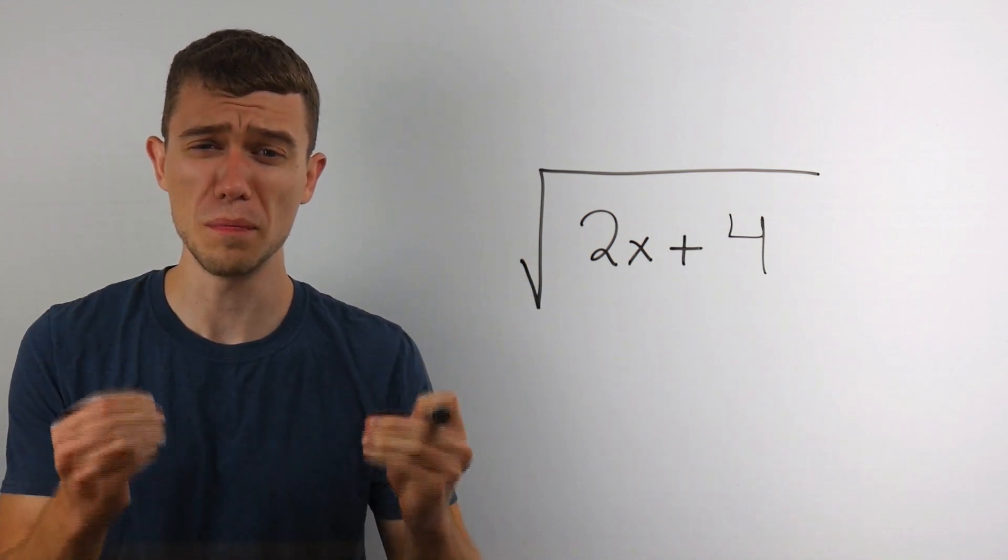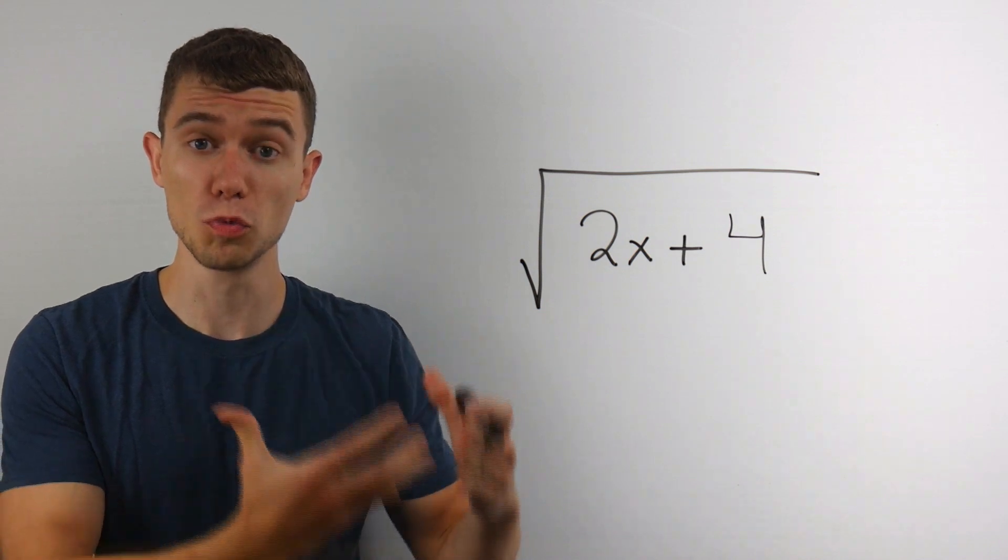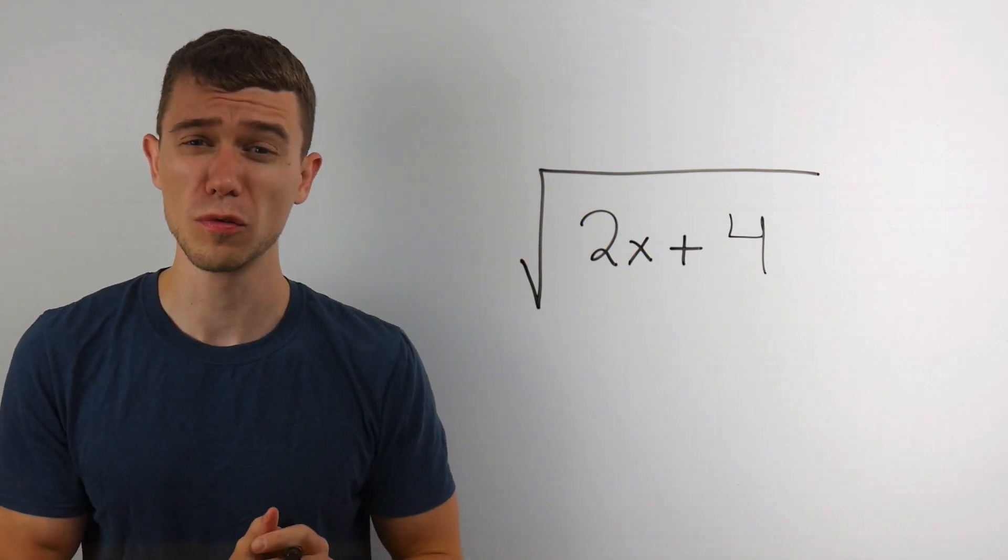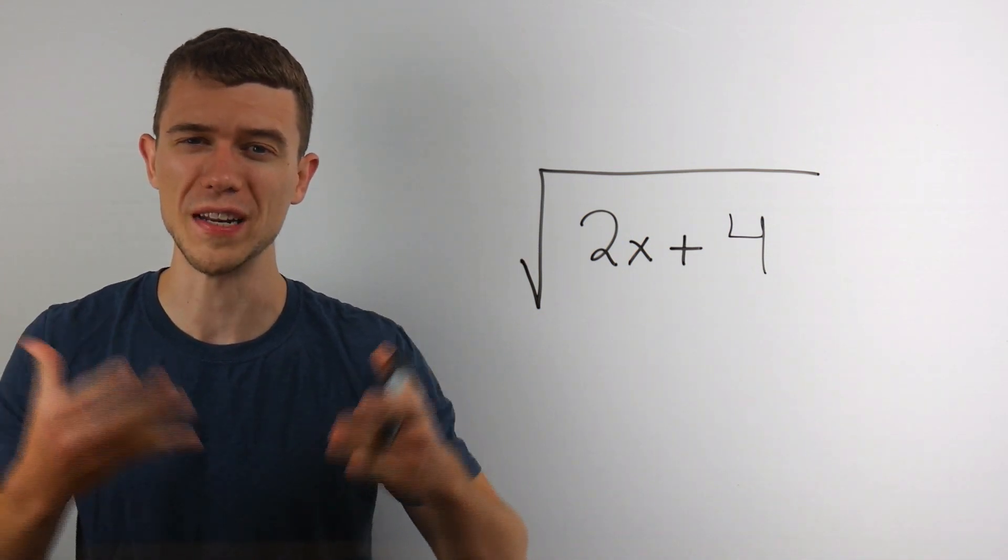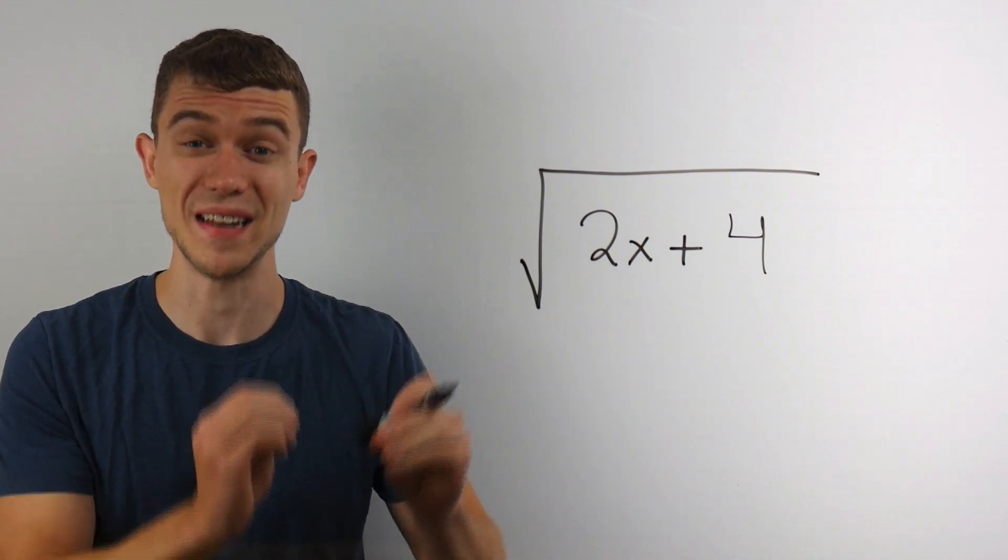Quick video, how do you find the domain of square root functions? Well we know for real numbers, if it's a square root or any even root, any even radical, you can't take the square root of a negative.